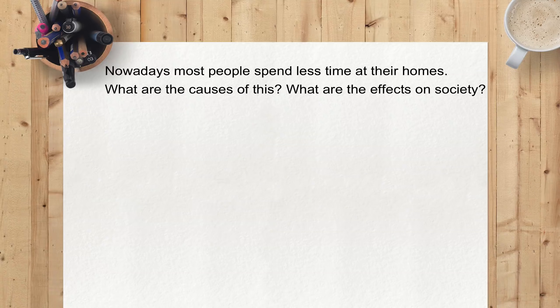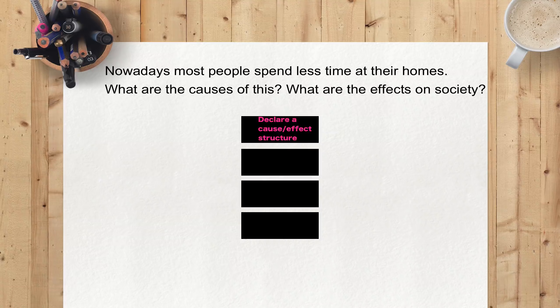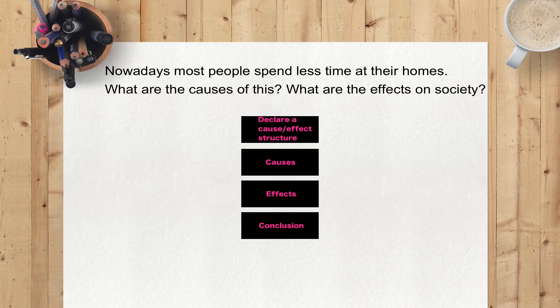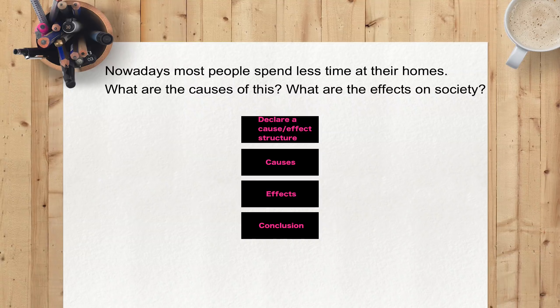Here is another recent question. Nowadays most people spend less time at their homes. What are the causes of this? What are the effects on society? Once again, a fitting response structure would be an essay that declares a progression in the introduction paragraph and then addresses the causes and effects in turn in the subsequent supporting paragraphs.